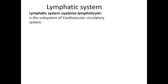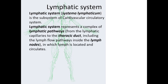The lymphatic system, in Latin systema lymphaticum, is a subsystem of the cardiovascular circulatory system. It represents a complex of lymphatic pathways from the lymphatic capillaries to the thoracic duct, including the lymph flow pathways inside the lymph nodes, in which lymph is located and circulates.